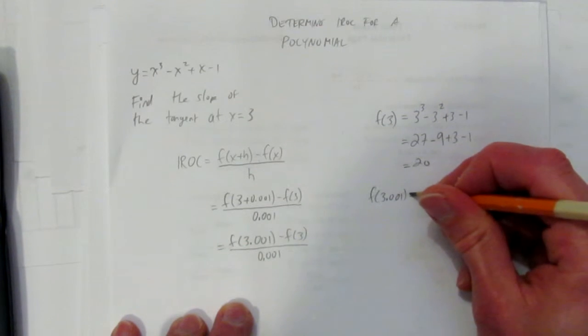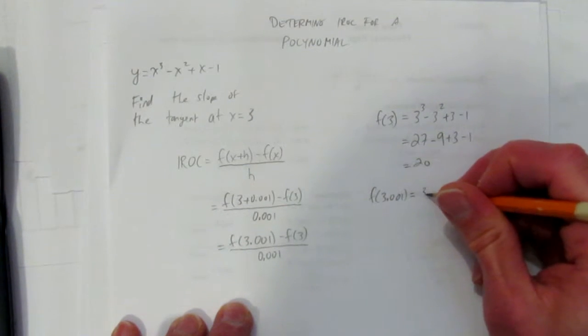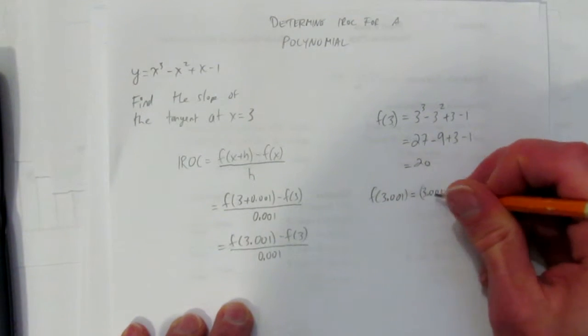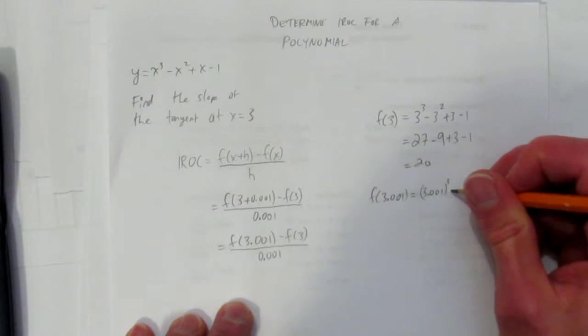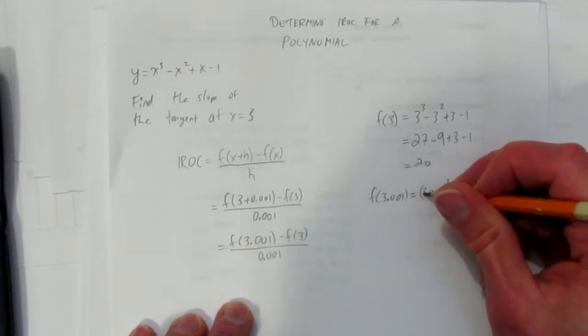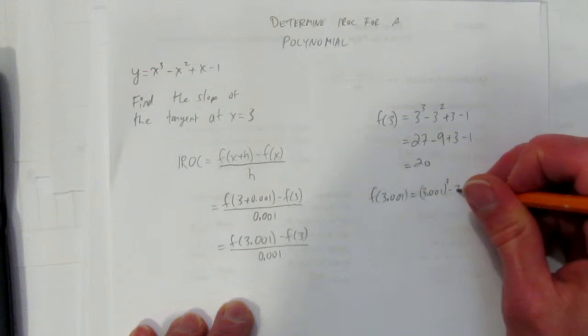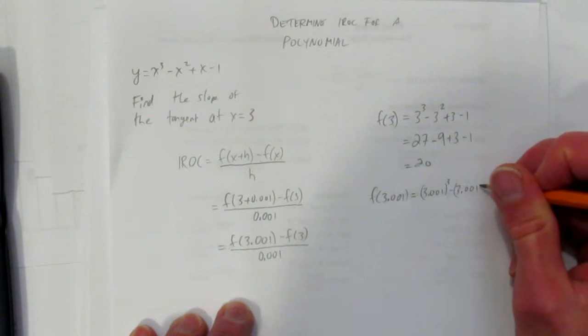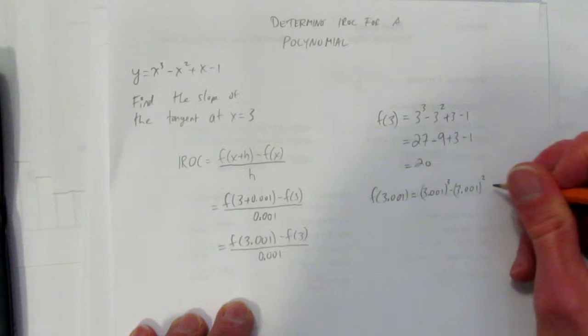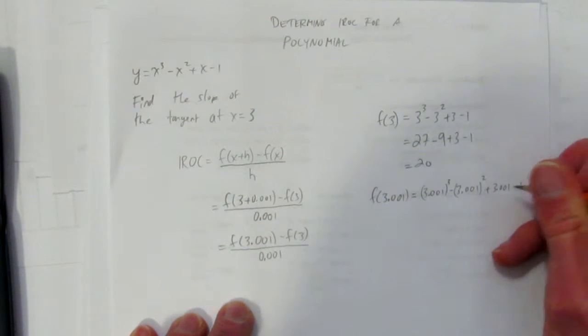So let's take this second point, sub it in: 3.001. I'm going to put that in brackets now because I want to clearly see—that's cubed. You don't need it if there's no negative, but I'm putting it just so I can clearly see and remember to cube and now square this value, plus 3.001 minus 1.